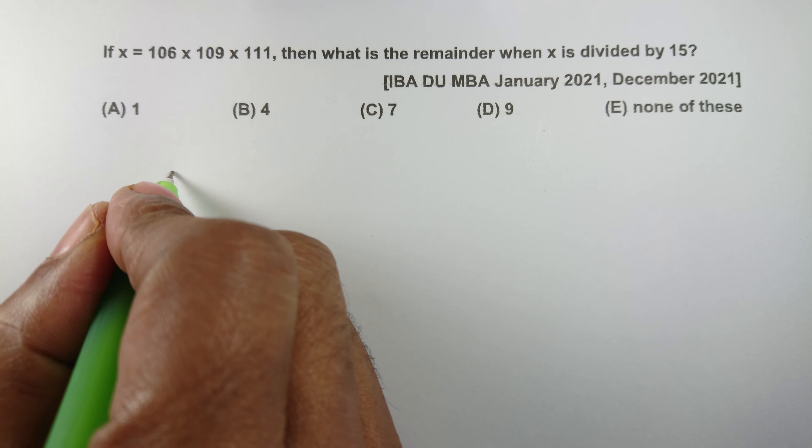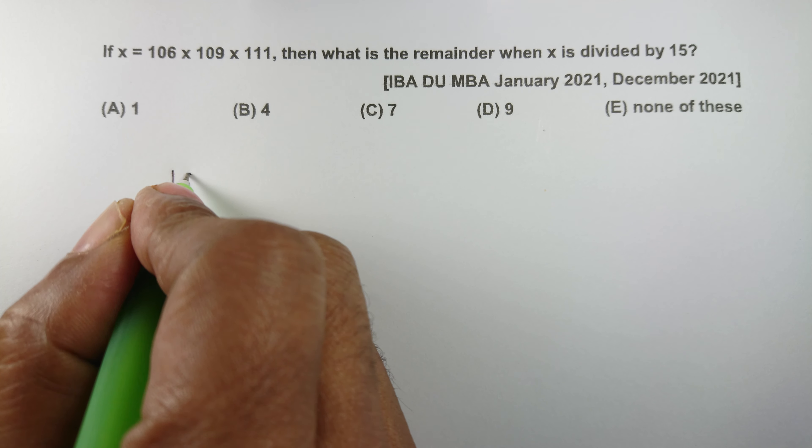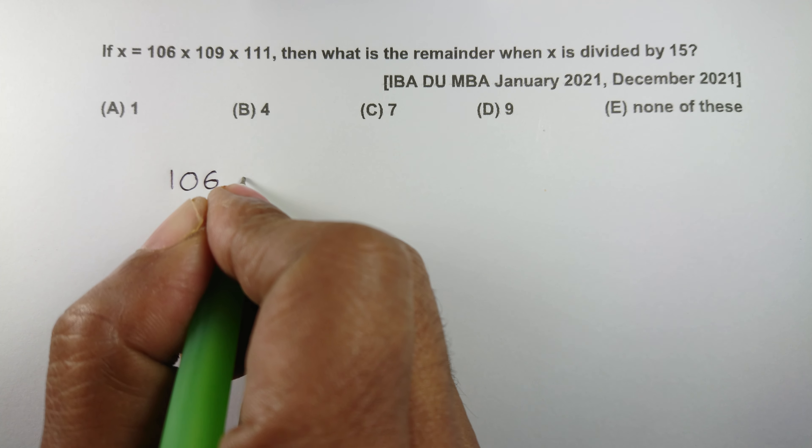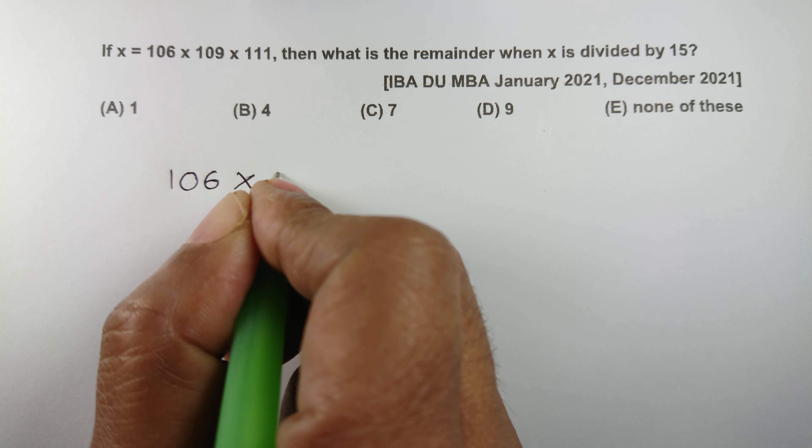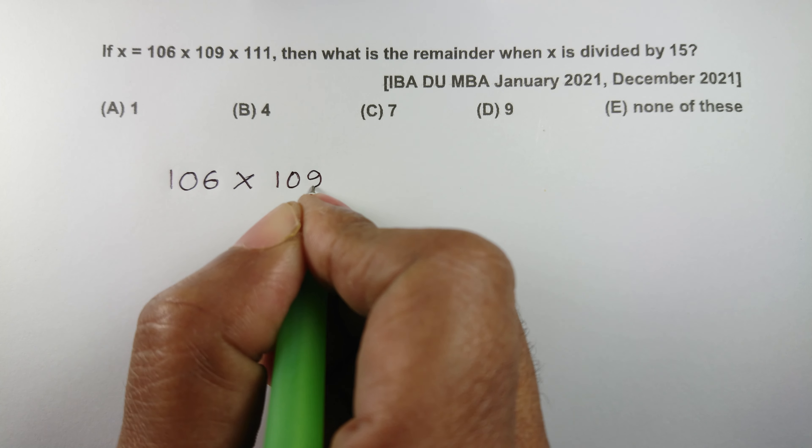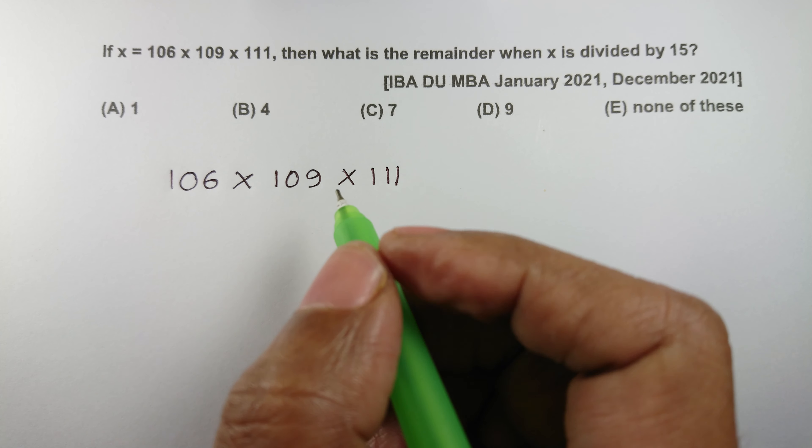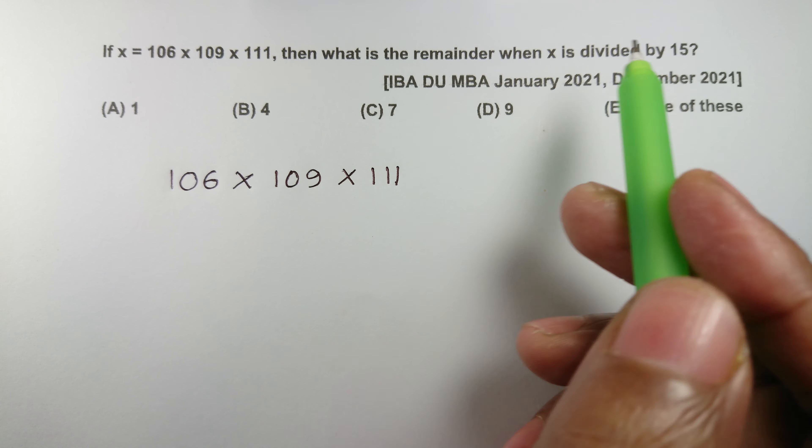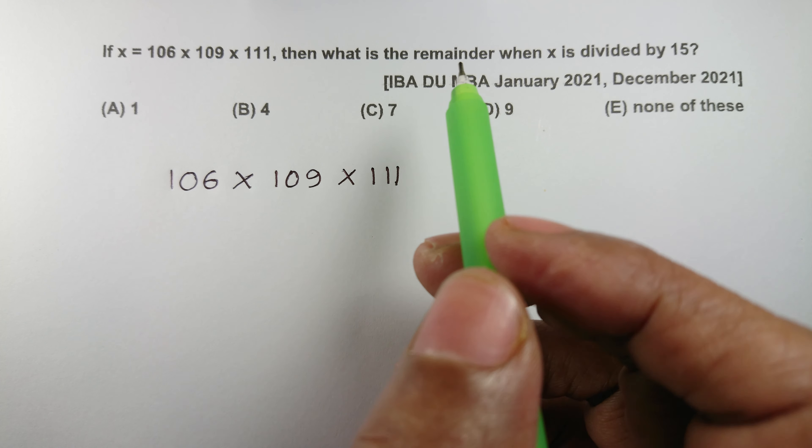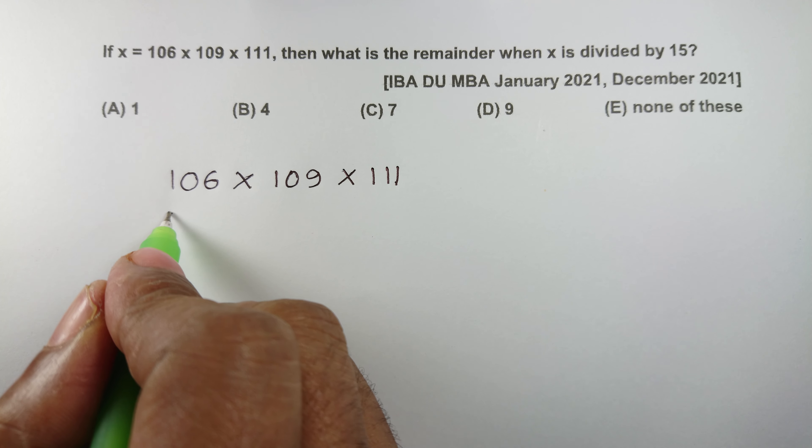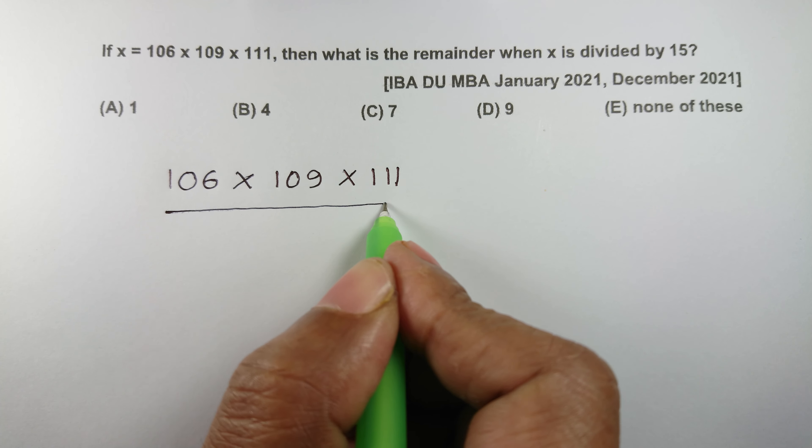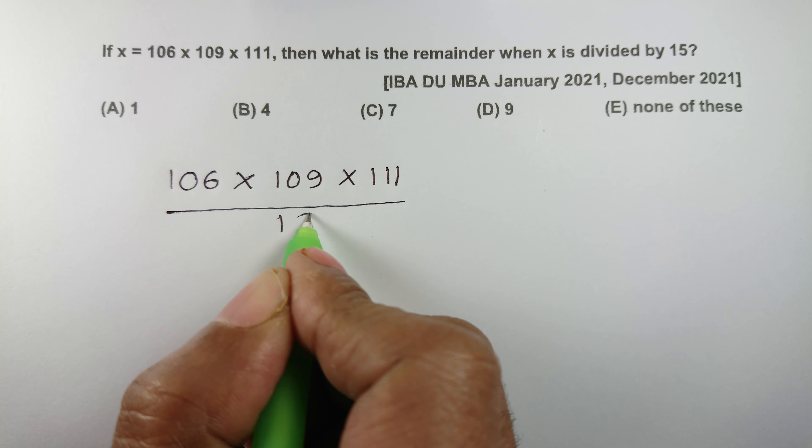એક્સ છે 106 multiply 109 multiply 111 એ 3 સંખ્યા ગુણ, પછી x ને જ્યારે 15 થી ડિવાઇડ કરવા હોય તારે remainder બાકી રહેશે કેટલા થશે. આમાં 3 સંખ્યા કે ગુણ કે 15 થી ડિવાઇડ કરવા પ્રયત્ન કરીએ આમ રા પ્રત્યેક સંખ્યા કે